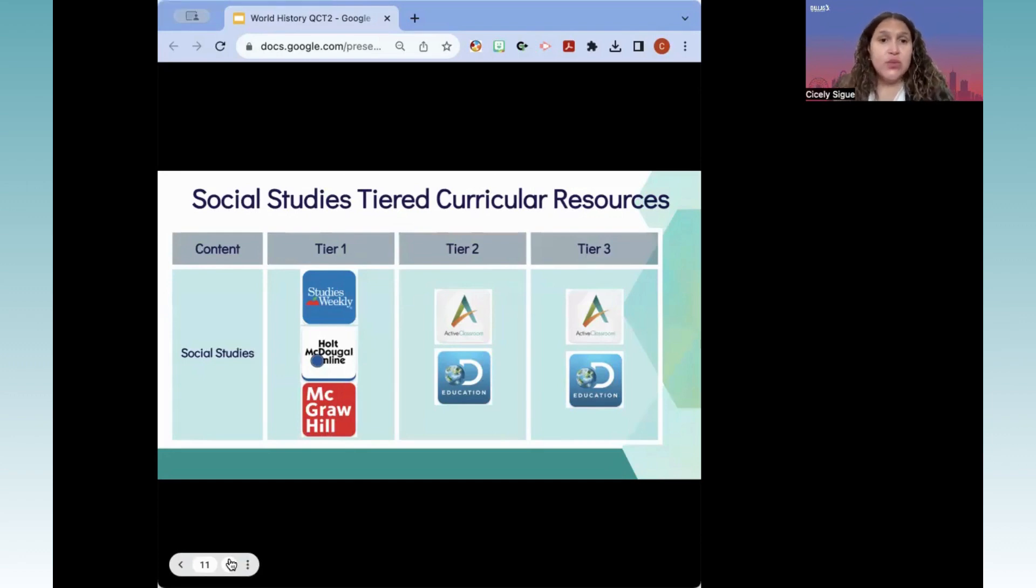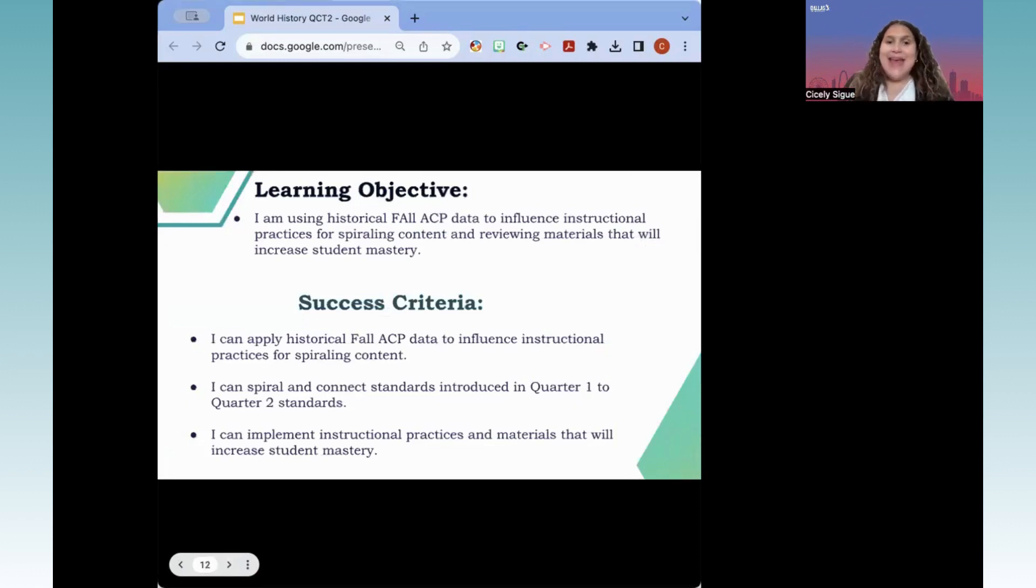Here are those resources provided by the social studies department. You can access these icons in Clever. For elementary tier one instruction, we have Studies Weekly. For high school and middle school, HMH. Specifically for world history, HMH is going to be our tier one instruction. And for government, we have McGraw-Hill. For your tier two and tier three instruction, we have the purchased Active Classroom resource. We also have Discovery Education available for you. If you would like to dive deeper into that, it is also on your participant guide. You have links attached to it so that you can access more information about that.